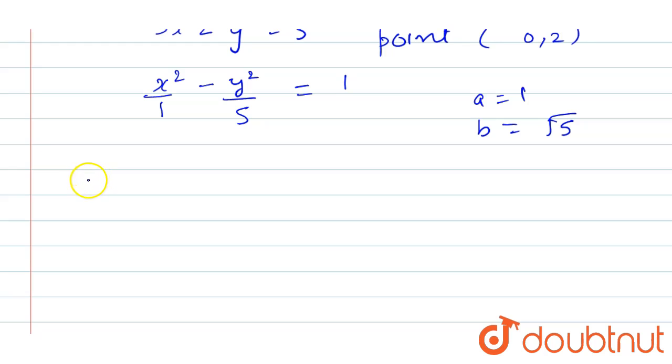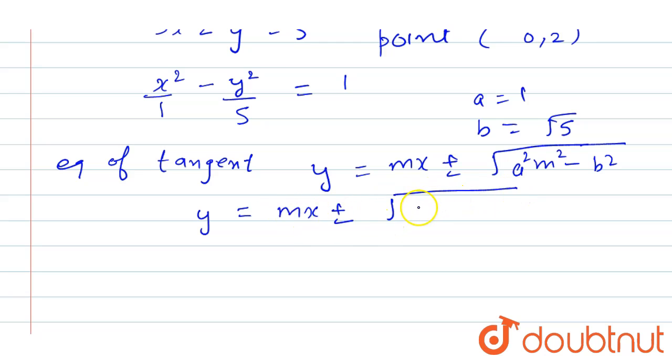Now the formula for the equation of tangent is y = mx ± √(a²m² - b²). Substituting our values a² = 1 and b² = 5, we get y = mx ± √(m² - 5).